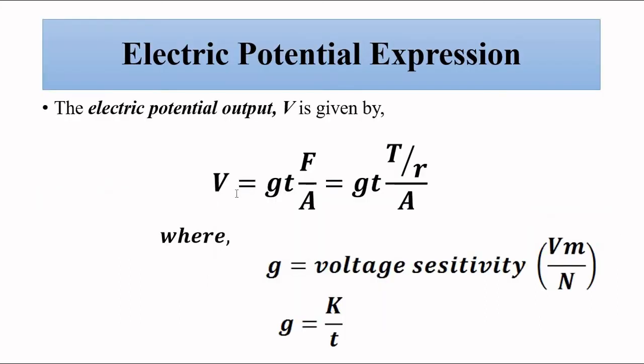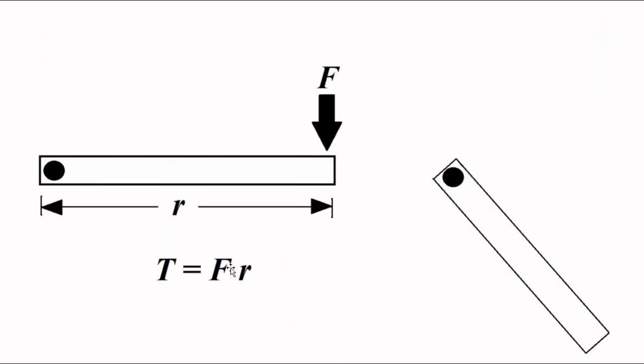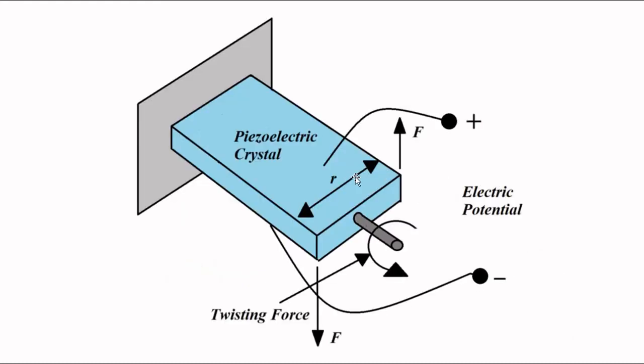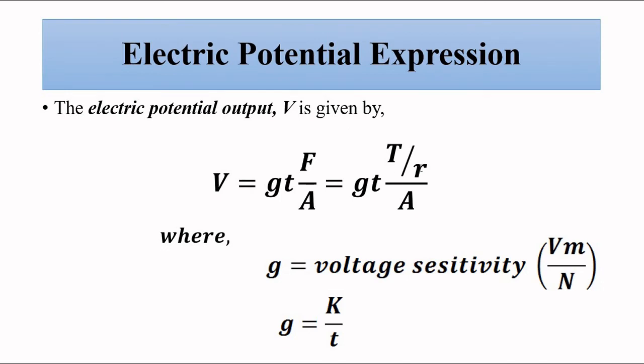That electric potential is given as per this relationship: V equals g times t times F by A, where g is the voltage sensitivity of the piezoelectric transducer, t is the thickness of the piezoelectric crystal, F is the force applied, and A is the area of the crystal. Since torque equals force into perpendicular distance from the axis of rotation, we can replace F as T by r, getting a direct relationship between the voltage and the torque.